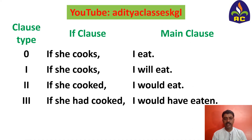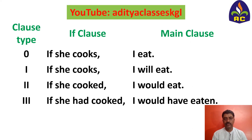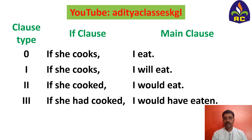Here are some more examples. Zero conditional: if she cooks, I eat — this is a usually happening thing. First conditional: if she cooks, I will eat — this is your belief that the action is going to happen in future, and that is sure. Second conditional: if she cooked, I would eat — this action is doubtful. Third conditional: if she had cooked, I would have eaten — now it is not possible to happen as it is too late.